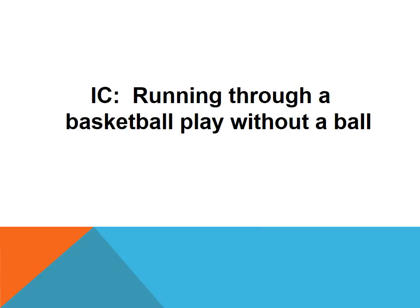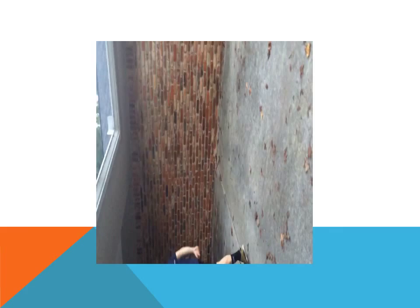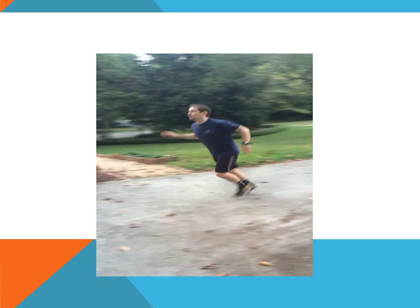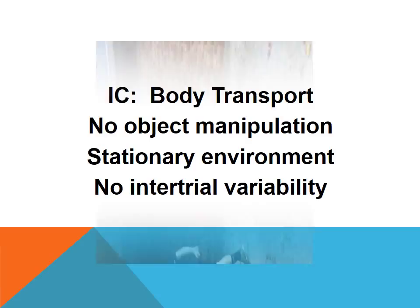Next up is the 1C task: while running, practice a basketball shot without a ball. This is a 1C task because we have body transport, no object manipulation, the environment is stationary, and we have no inter-trial variability.